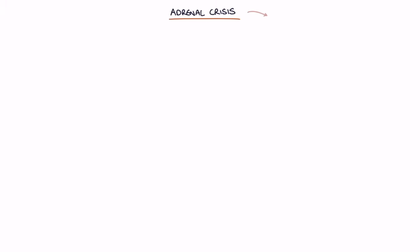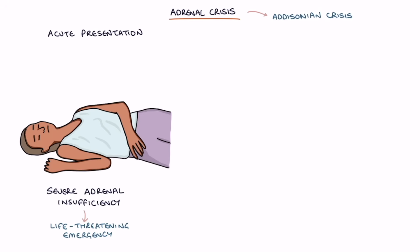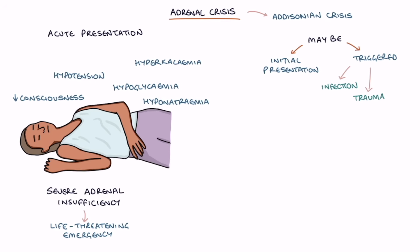Finally, let's talk about adrenal crisis, also known as Addisonian crisis. This describes an acute presentation of severe adrenal insufficiency where the absence of steroid hormones leads to a life-threatening emergency. Patients may present with reduced consciousness, hypotension or low blood pressure, hypoglycemia or a low glucose level, hyponatremia or low sodium, and hyperkalemia or high potassium. Adrenal crisis may be the initial presentation of adrenal insufficiency, or it can be triggered by infection, trauma, or another acute illness in a patient with established adrenal insufficiency.